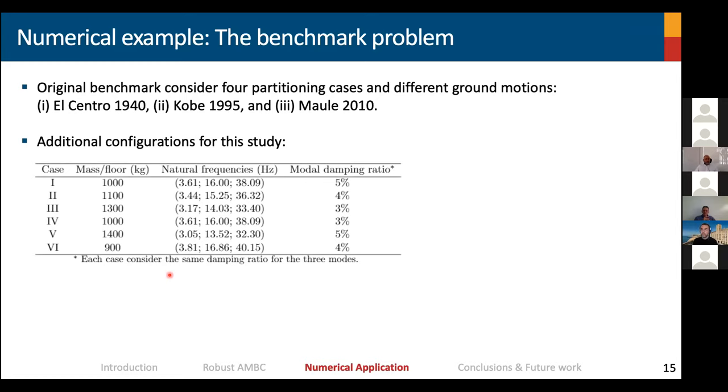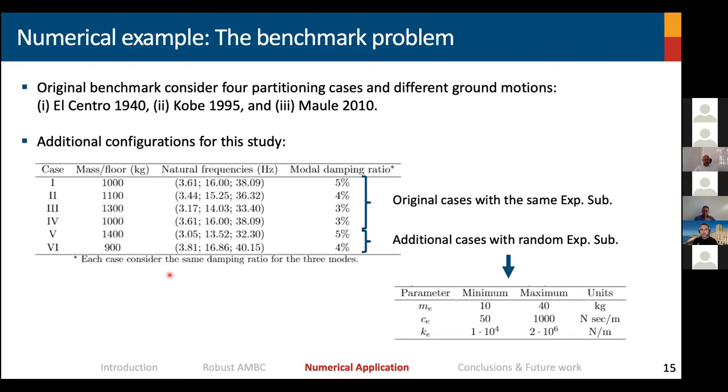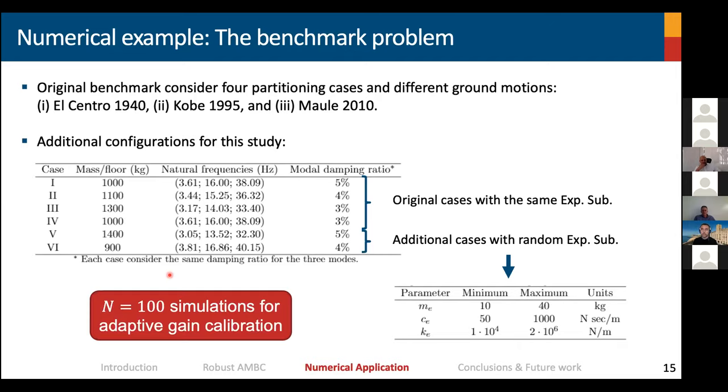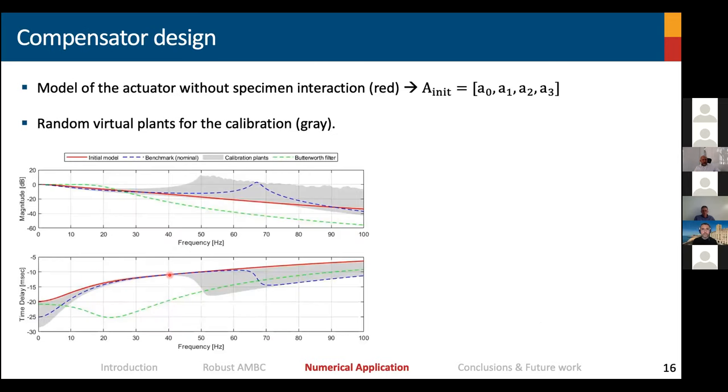Additional configurations for this study are proposed. The first four are the original cases from the benchmark problem with the same experimental substructure. Meanwhile, the fifth and sixth case are additional cases that incorporate randomness in the experimental substructure. We consider for calibration purposes a number of 100 simulations for each step into the optimization scheme.